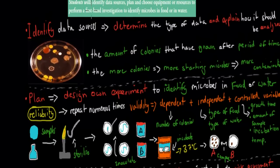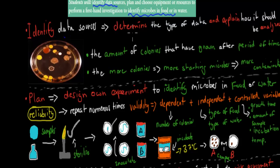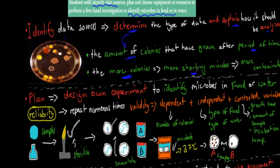The next topic is an experiment. Students will identify data, plan and choose equipment to perform a first investigation to identify microbes in food or water. The purpose was identifying microbes in food or water — we did the agar plate experiment. First, 'identify data sources' means determine the type of data and explain how it can be analyzed. In this case, we collected the amount of colonies that have grown after a period of time. The more colonies that grew, the more microbes there were to begin with, meaning the food or water was more contaminated.